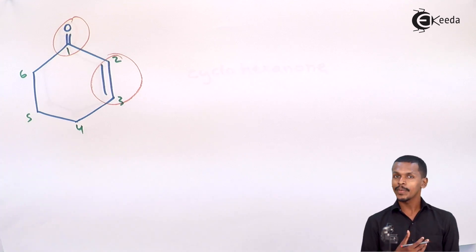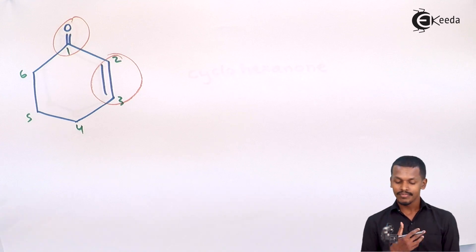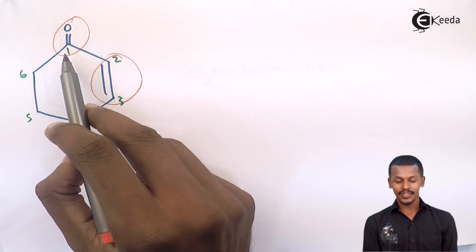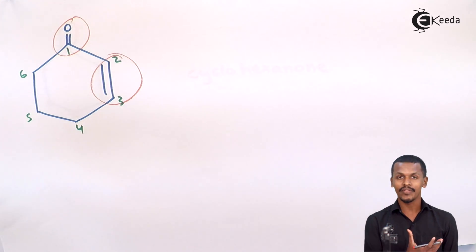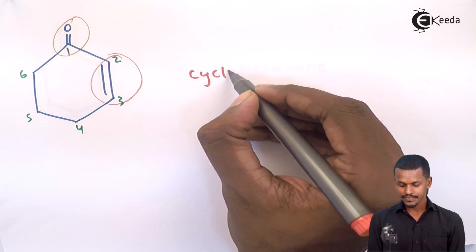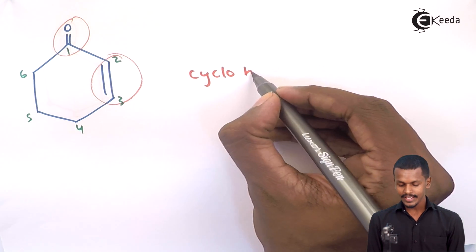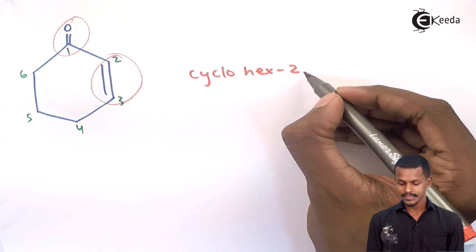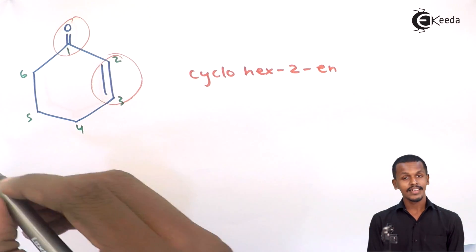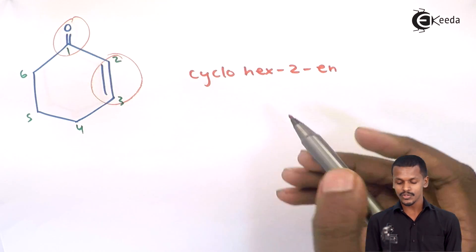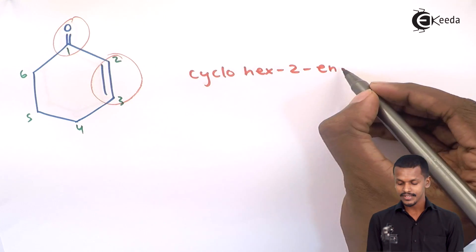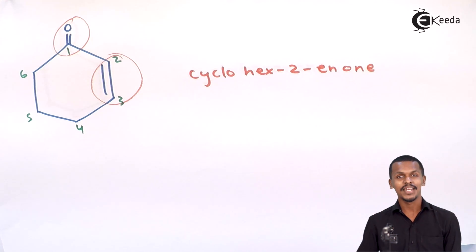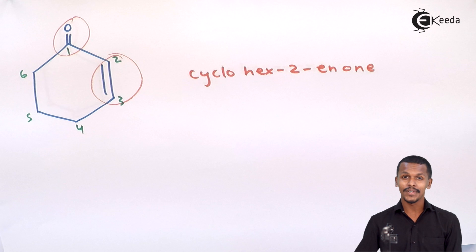The carbon-carbon double bond runs from carbon 2 to carbon 3, so that portion is named 'cyclohex-2-en'. The principal functional group is the ketone, so the full name of this compound is cyclohex-2-en-1-one.